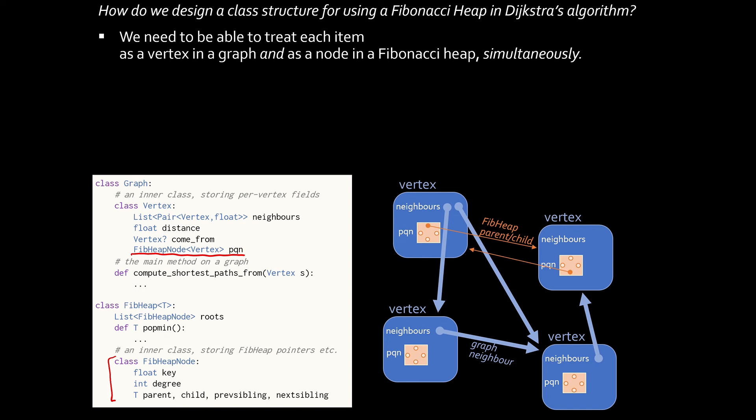So the way we'd achieve that in an object-oriented design is we'd make the FibHeapNode class generic. Here I've defined Fibonacci heap of T, a generic class, and I'll make it so that each FibHeapNode has pointers of type T. So this is the way that you can have an inner object like the FibHeapNode, which points to an outer object like a vertex.